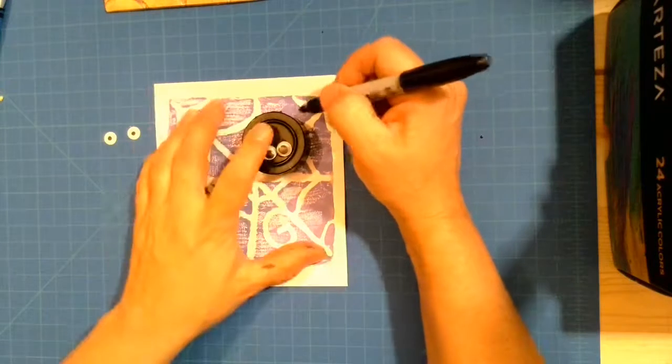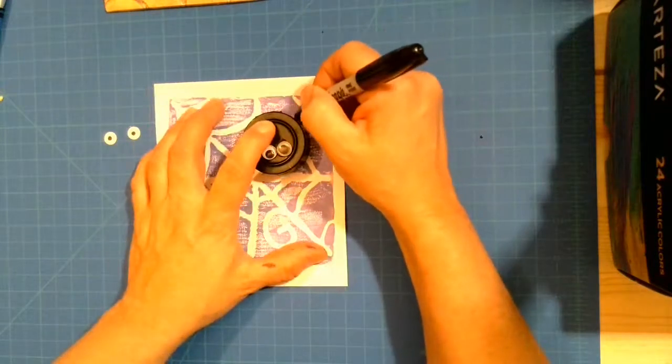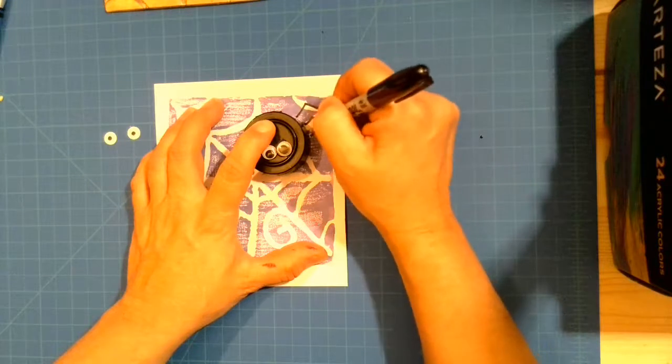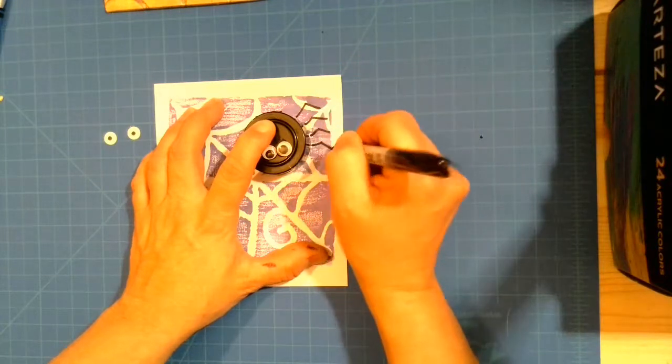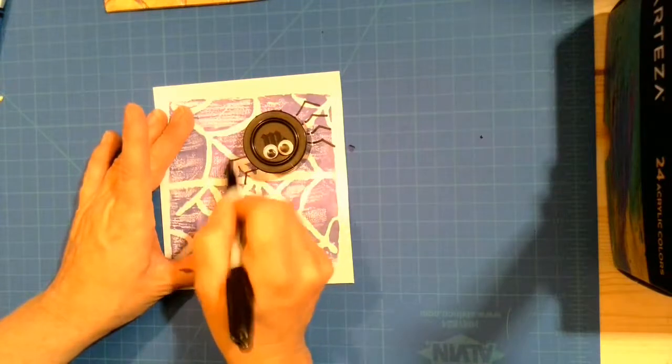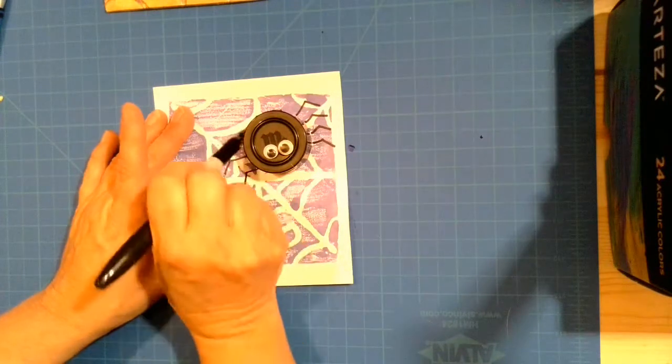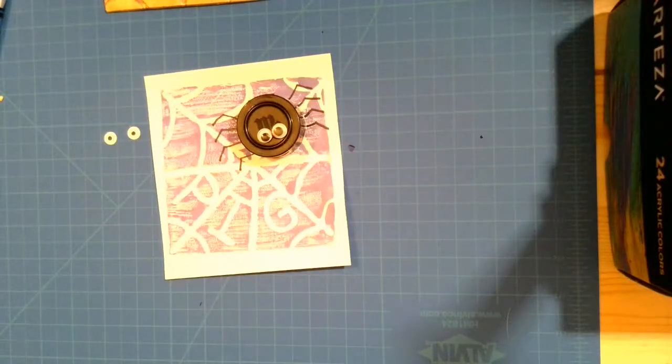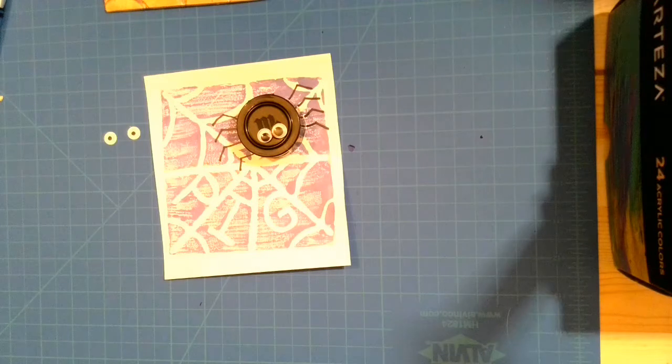So once my spider's eyes have been glued on my next step is to give him legs. Now spiders have eight legs so I'm going to put four legs on each side and there you have it. There is our printmaking spiderweb activity for the day. Thanks for listening!